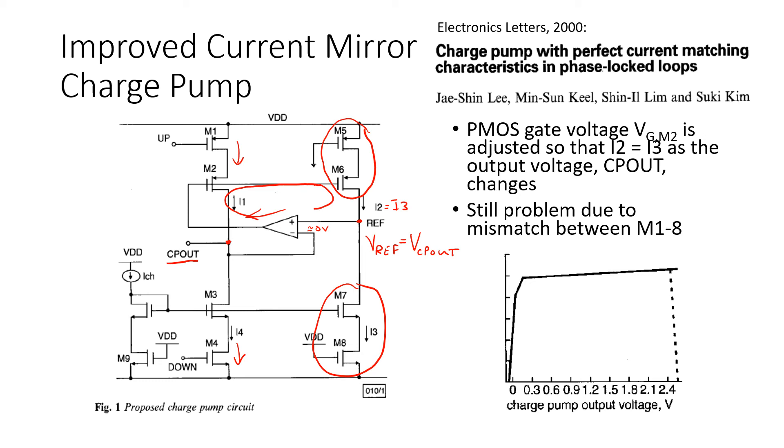The way I think of it is that the feedback loop ensures that Vref is a copy of the output voltage and it adjusts the gate voltage of M6 to be whatever it needs to be to ensure that I2 is equal to I3. And that as long as you've got good matching between these transistors, therefore I1 and I4 are equal.